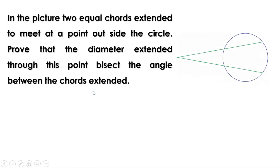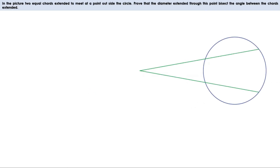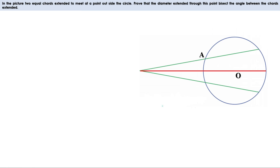Another problem: In the picture, two equal chords are extended to meet a point outside the circle. Prove that the diameter extended through this point bisects the angle between the chords extended. Let the center be O and the equal chords be AB and CD. Let them intersect at a point P outside the circle. Let us draw perpendiculars from the center to the chords. Let them meet at Q and R respectively. Now consider triangles POQ and POR.